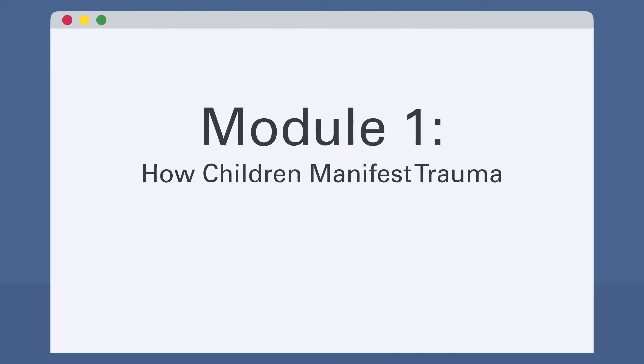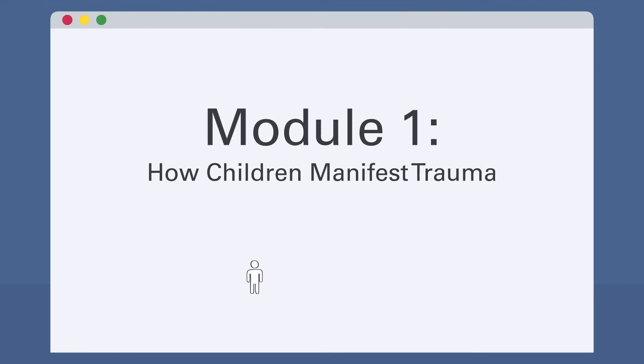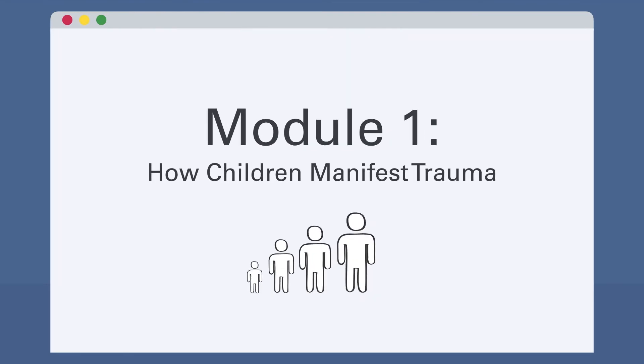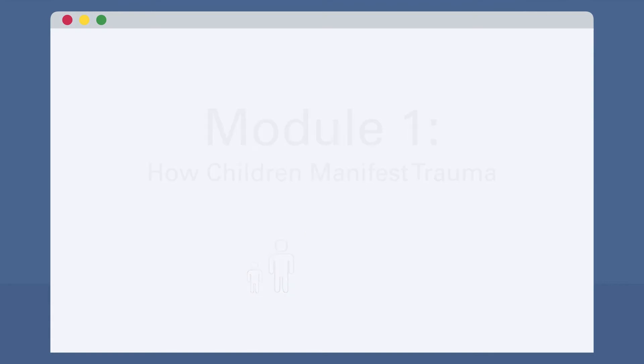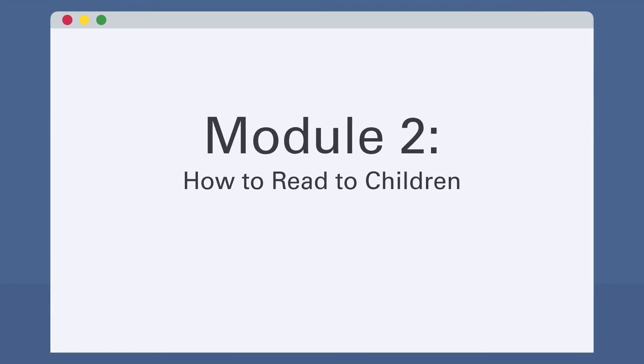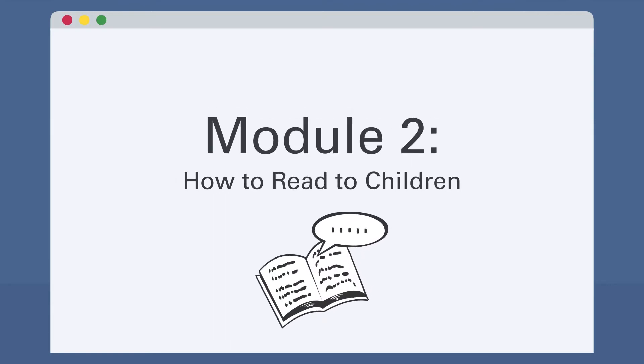Module 1 begins with an introduction to how substance use disorder-related traumas manifest in children. Module 2 focuses on how to read to children with a trauma-informed approach, how to have conversations, and what happens when children and adults read together.